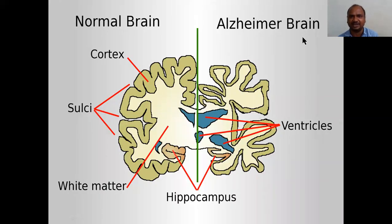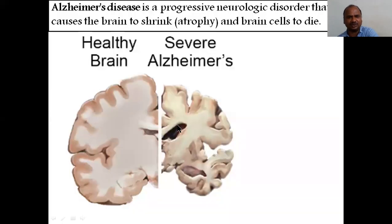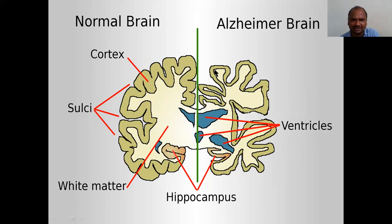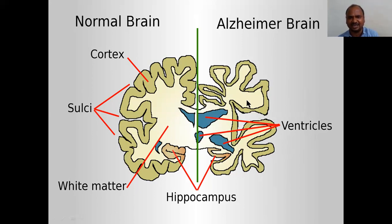Here you can see the normal brain and the Alzheimer's brain compared side by side. In the Alzheimer's brain, the ventricles are increased in size. The cortex — see how much thickness there is in the healthy brain — here the thickness is less. The volume is reduced; there is shrinkage throughout. The gyri and sulci are affected. There is also a reduction in white matter, and grey matter is affected. The brain is shrinkage, and you start losing your memory.